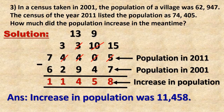Third example: In a census taken in 2001, the population of a village was 62,947. In the census of the year 2011, the population was listed as 74,405. How much did the population increase in the meantime?